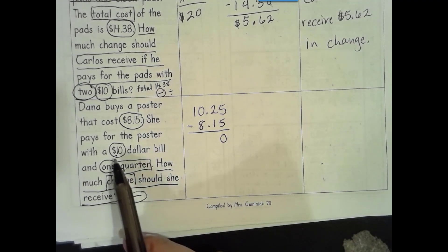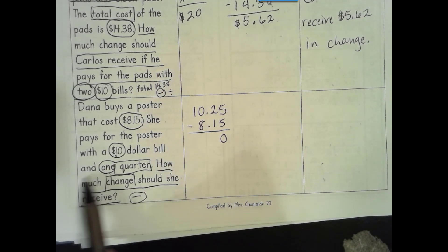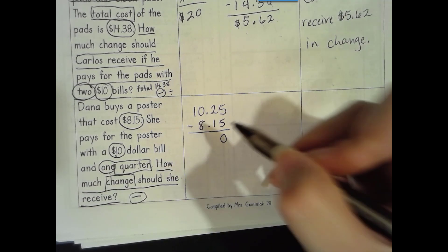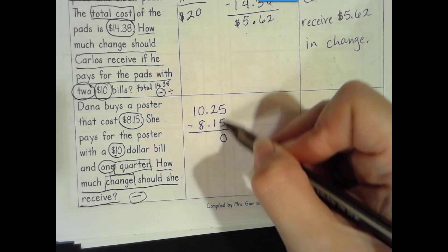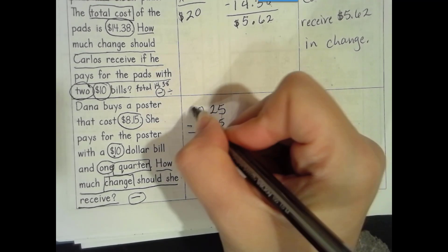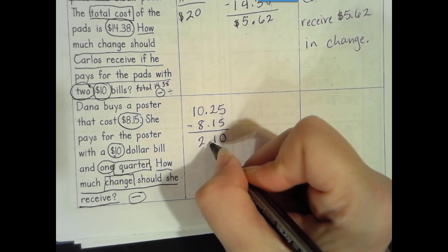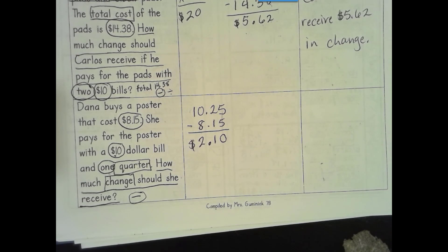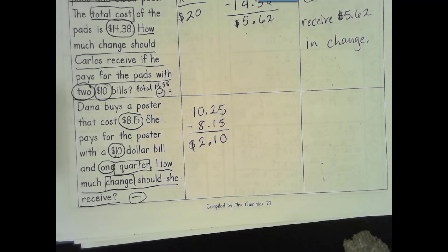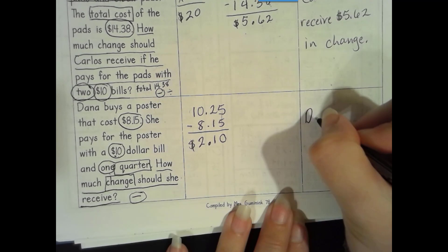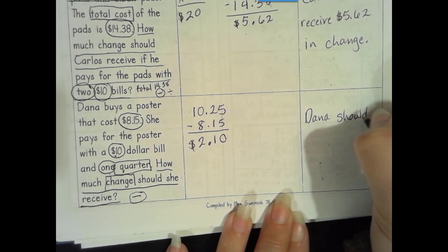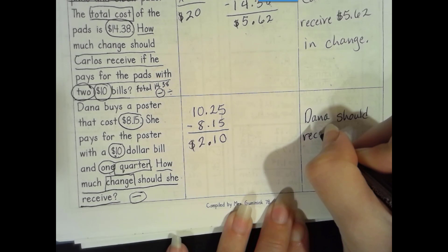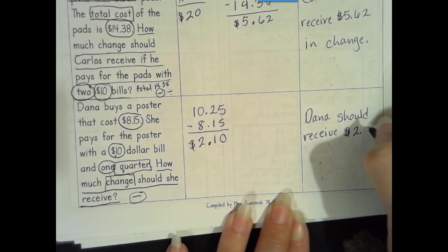Okay, what would make this harder is if you just saw this number and you went with it instead of making sure you knew you had the total amount. Because otherwise, this isn't very challenging. Number's the same, zero's a game. More on top, no need to stop. And then here, 10 take away 8 is 2. Bring that decimal. And there we have it, $2.10. Not a very difficult problem. But the difficulty comes in making sure you're careful when you're reading your word problem and understanding that it's $10 and one quarter, $10.25, not just $10. Dana should receive $2.10.